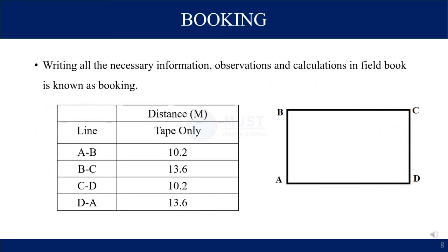For booking, we record the data in the field book. The calculations for lines a-b, b-c, c-d, and d-a are recorded. For example, using the chain or tape measurement method for the building, the distances are: 10.2 meters, 13.6 meters, 10.2 meters, and 13.6 meters. These are the distances of a closed or typical building.